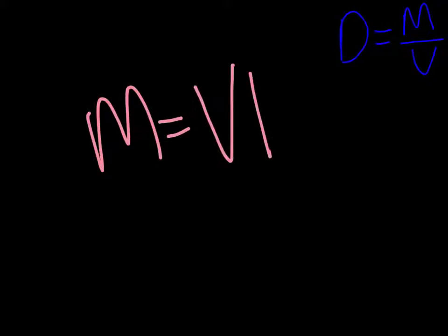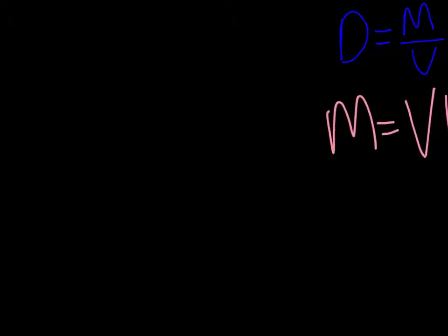Now there's different variations of this equation when you're given only two variables. So you could have mass equals volume times density or volume equals mass over density.